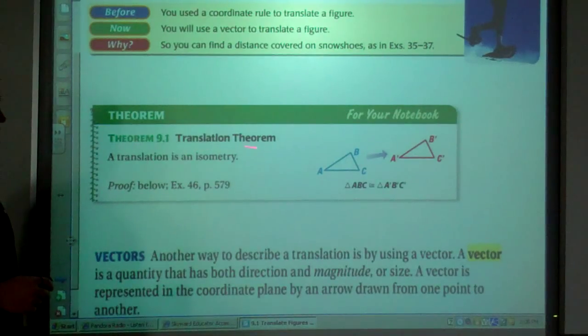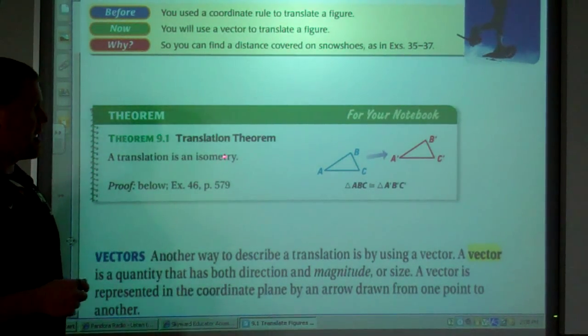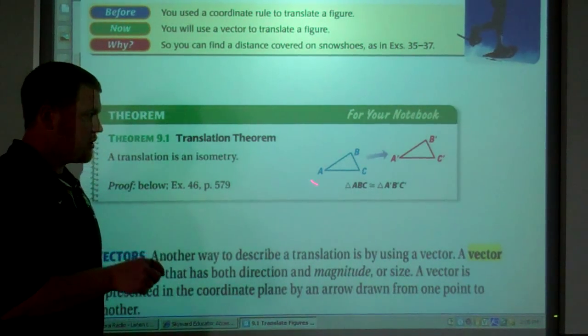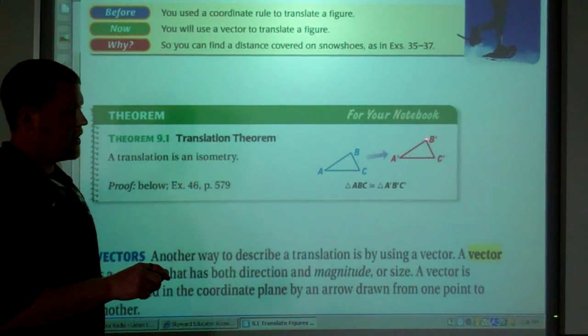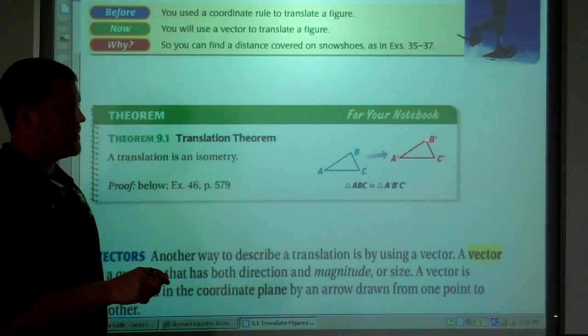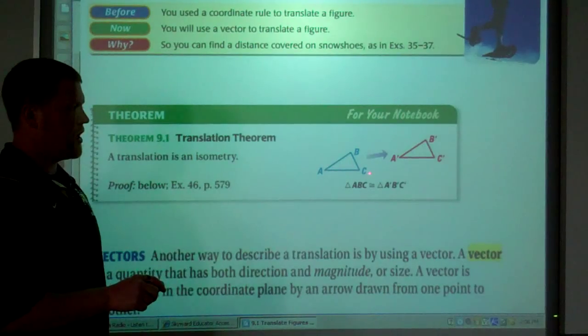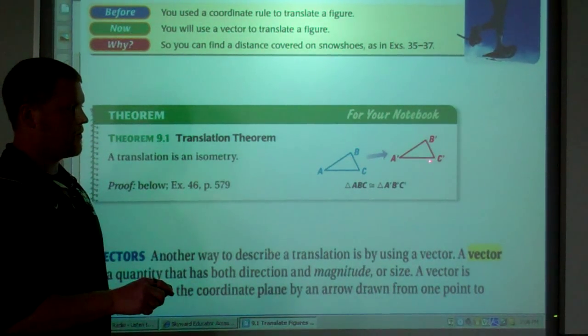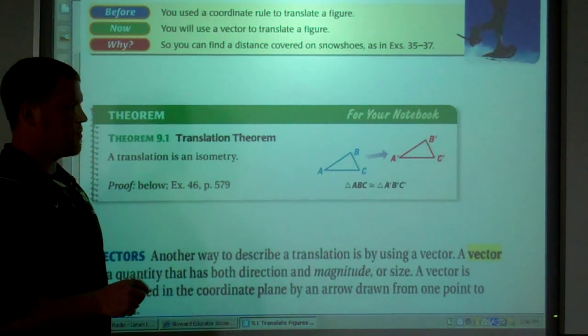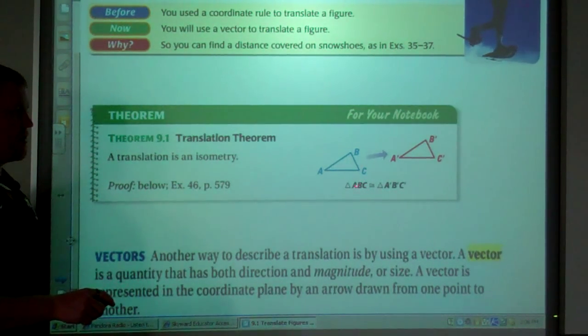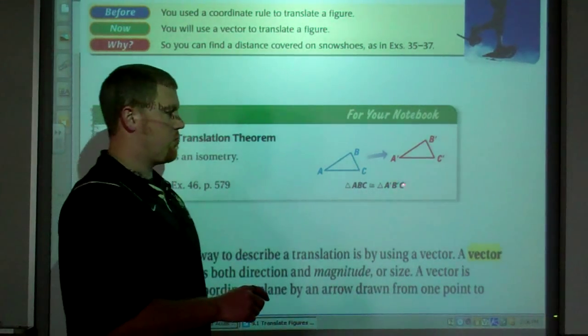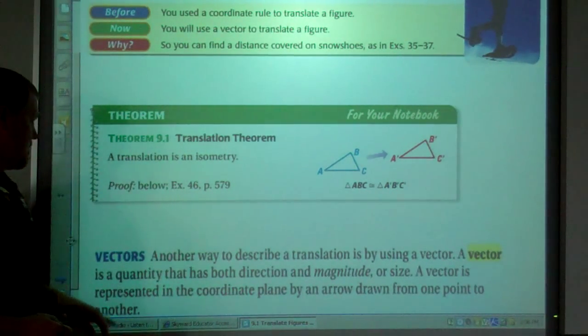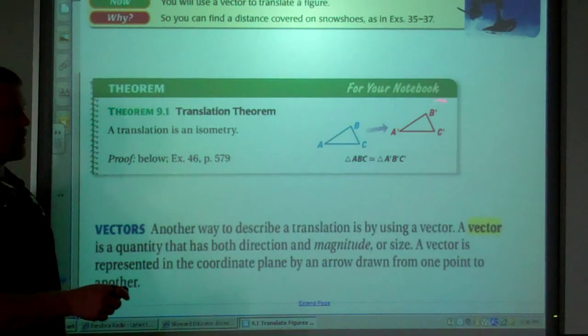Translation theorem. A translation is an isometry where you take an original triangle and we are moving it a certain distance. Point B to B prime, A to A prime, and C to C prime. The distance from those points to their respective new image is the same. The triangle ABC is congruent to triangle A prime, B prime, and C prime. So the two triangles are congruent.